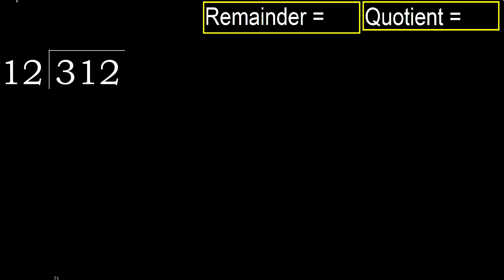312 divided by 12. 3 is less, therefore next. 31 is not less, therefore with 31. 12 multiply by which number is nearest to 31 but not greater?